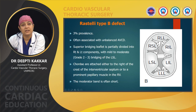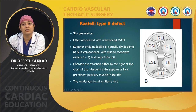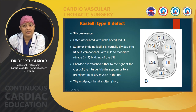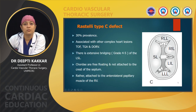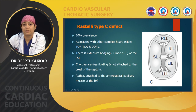Rastelli Type C is again a common type of defect and is associated with other complex heart lesions such as tetralogy of Fallot, TGA, and DORV. There is extensive bridging of the left superior leaflet; the chordae are free floating and not attached to the crest of the interventricular septum — rather they may be attached to the anterolateral papillary muscle on the RV side.